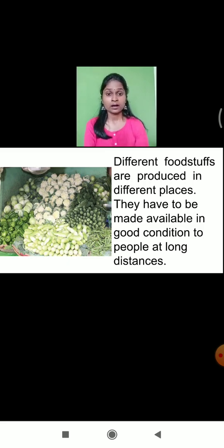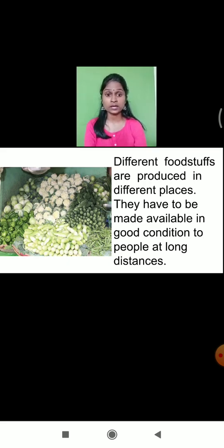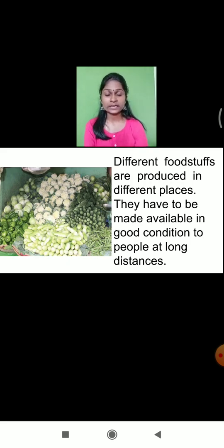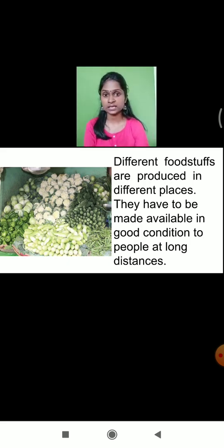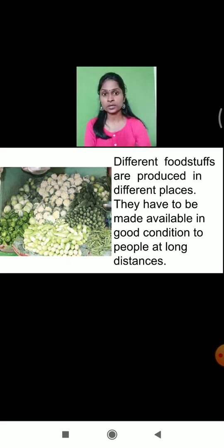When you visit the market to buy vegetables and fruits, different foodstuffs are produced in different places and have to be made available in good condition to people at long distances. For example, oranges are famous from Nashik, so oranges from Nashik have to be made available to people all over India. Certain mangoes are famous from Ratnagiri and Kokan, so they are also transported to all people in India in good condition.